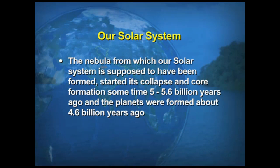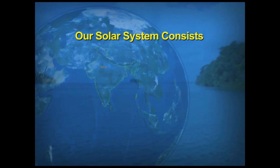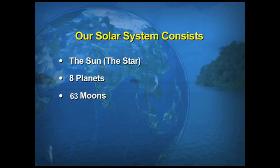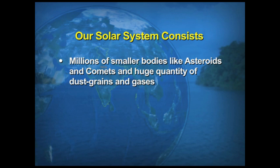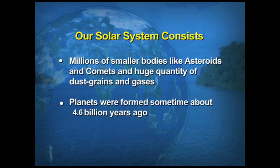The nebula from which our solar system is supposed to have been formed started its collapse and co-formation sometime 5 to 5.6 billion years ago. Our solar system consists of the sun, eight planets, almost 63 moons, millions of small bodies like asteroids and comets, and huge quantities of dust, grains, and gases. The planets were formed about 4.6 billion years ago.